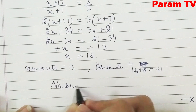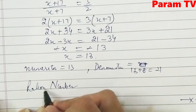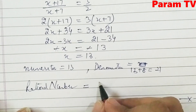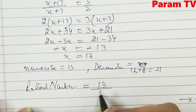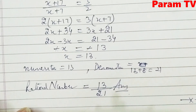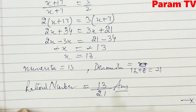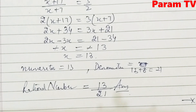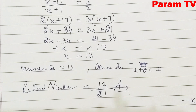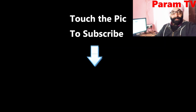So the required rational number is 13/21. This is all about Exercise 2.6. I hope that by watching all these videos, you understand this chapter — Linear Equations in One Variable, Chapter 2 for Class 8. If you have any queries or questions, please write to us in the comment box. We will try to solve them. Thank you so much for watching this video.